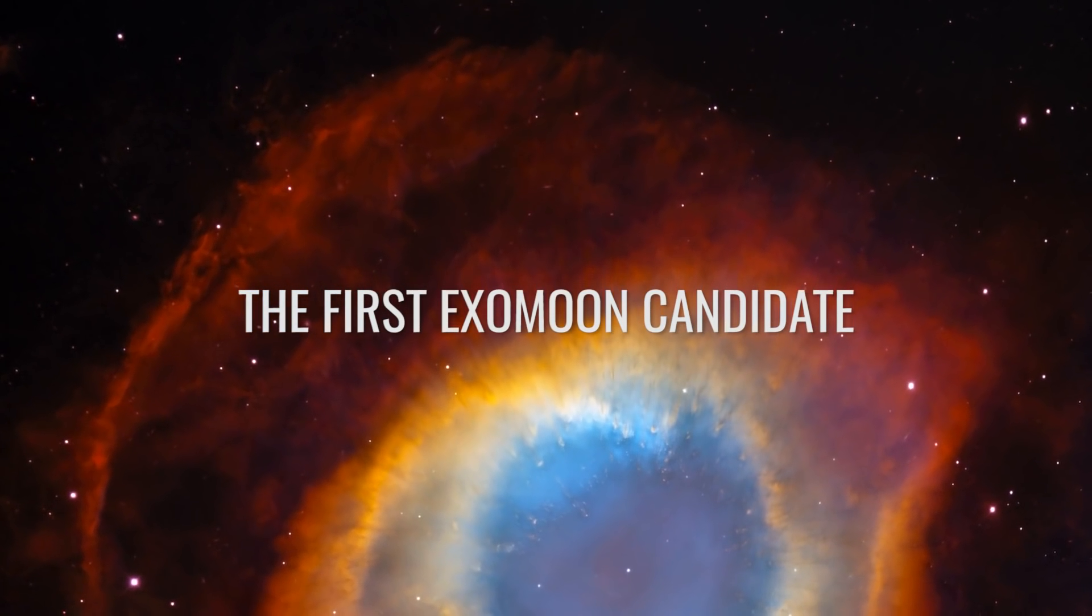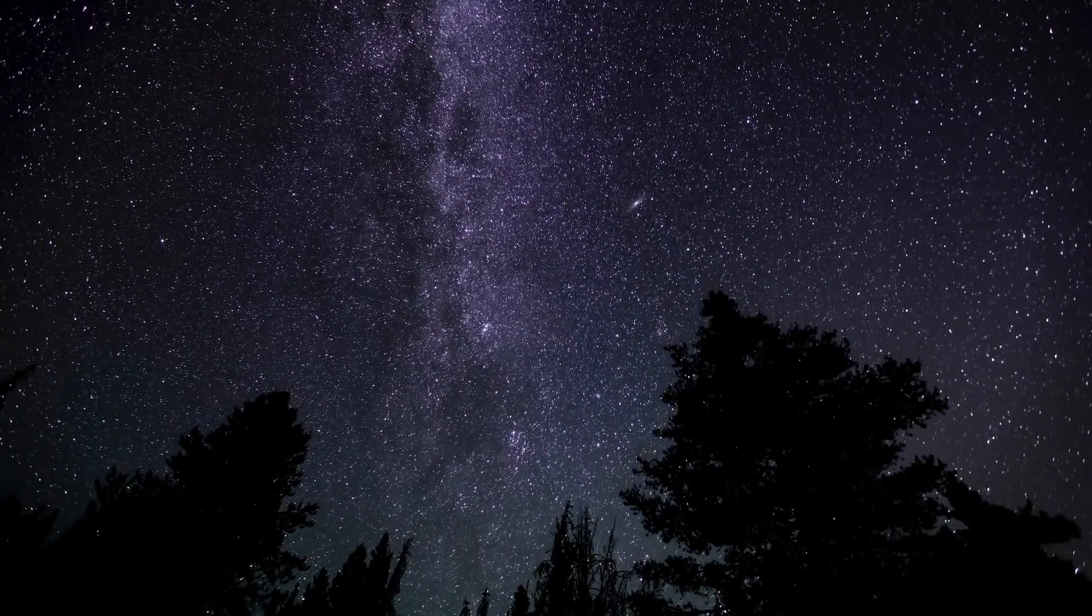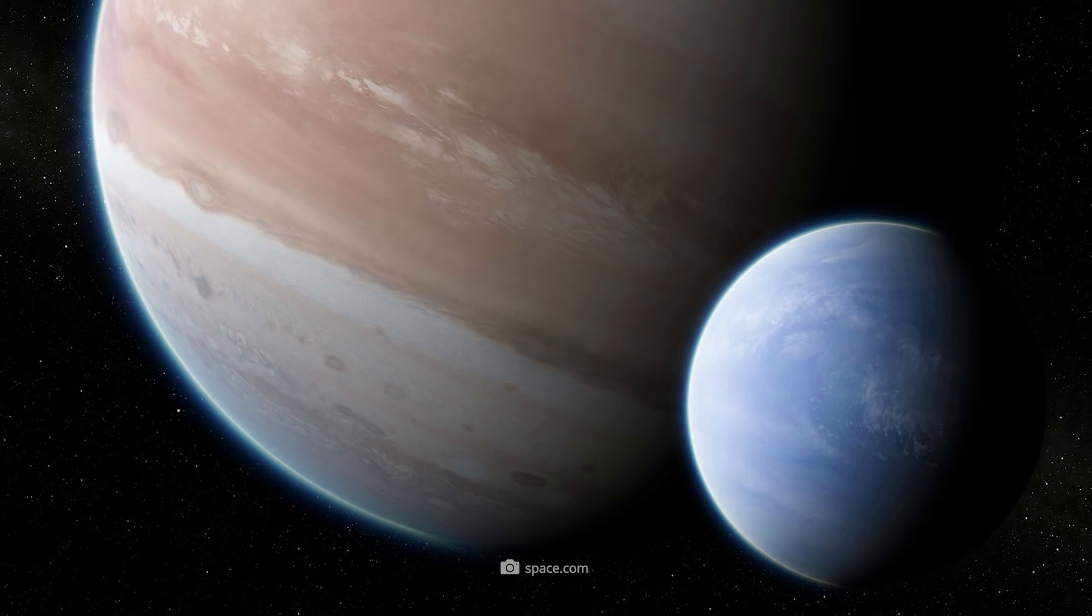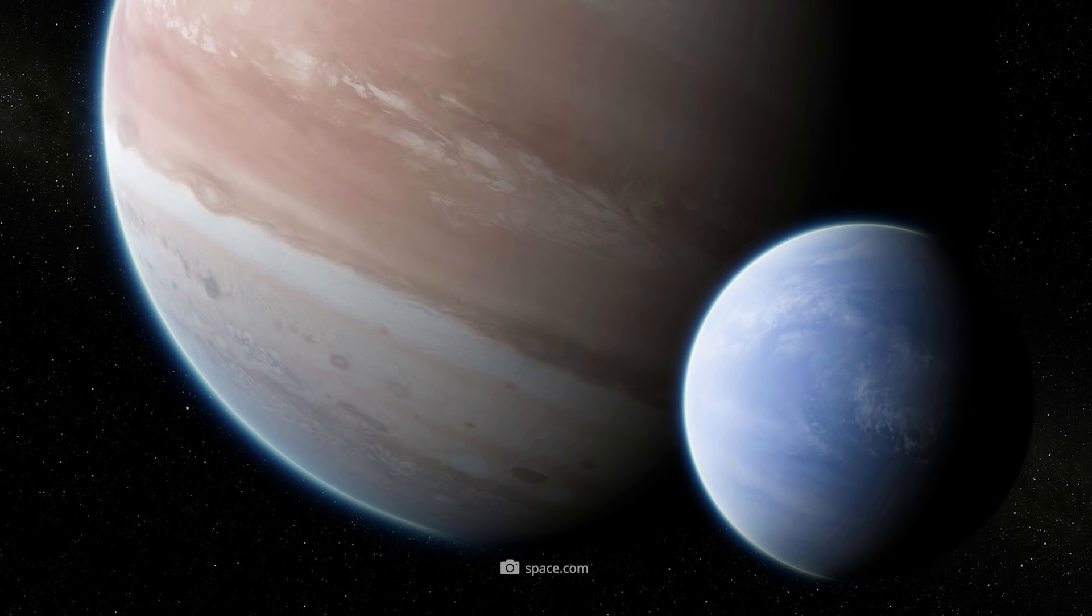The First Exomoon Candidate. About 8,000 light-years away from our Earth, in the Swan constellation, the exoplanet Kepler-1625b moves in its orbit.